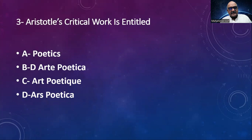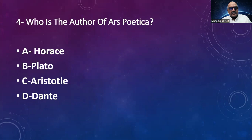Number three: Aristotle's critical work is entitled — options are Poetics, Ars Poetica, Art Poetic, Arts Poetica. The answer is Poetics. Number four: Who is the author of Ars Poetica? Options are Horace, Plato, Aristotle, Dante. The answer is Horace, who was Roman and his approach was classical.